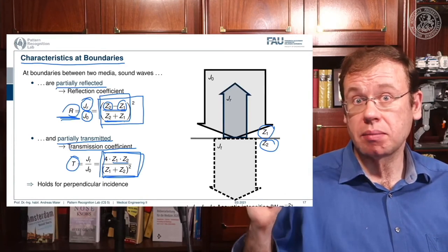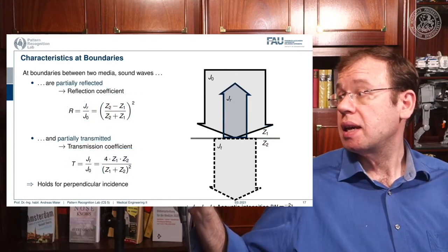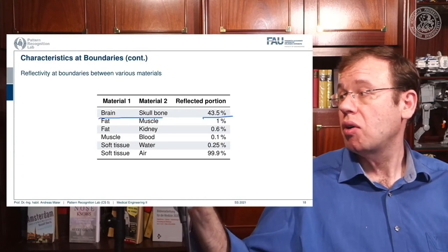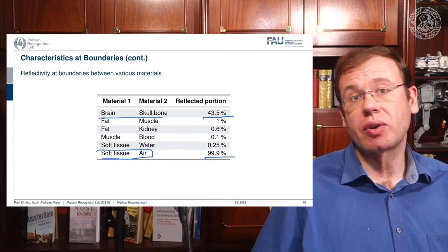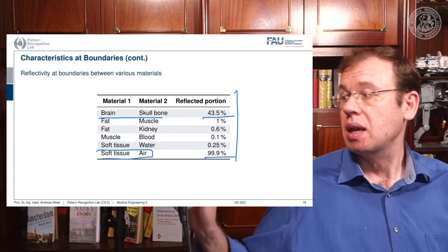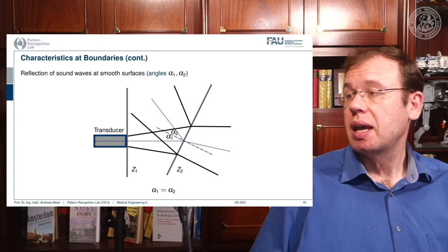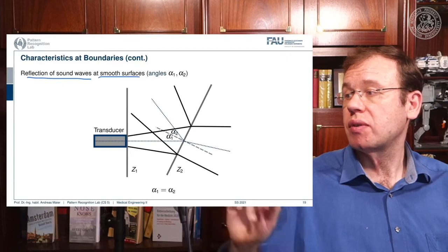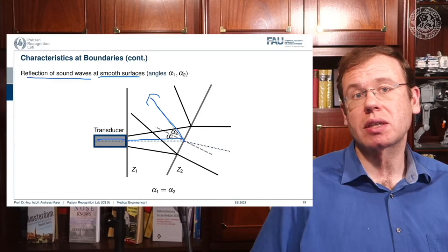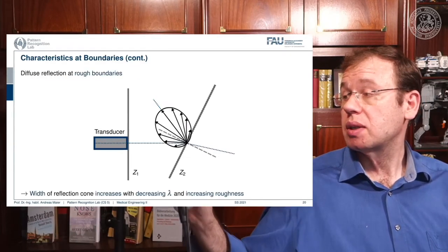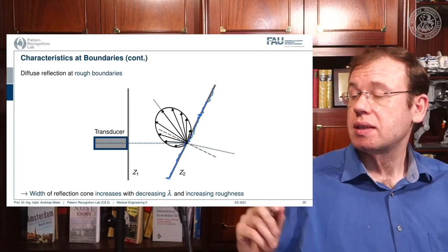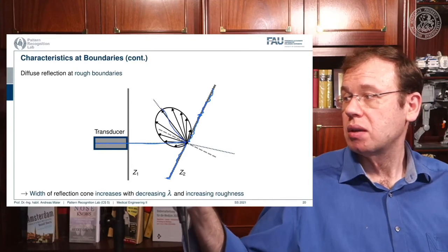We can compute reflection percentages from these acoustic impedances: brain and skull bone show 43% reflection, soft tissue and air show 99.9% reflection — a very high value. At smooth surfaces, a wave would reflect in a different direction. In the body, however, surfaces are never perfectly straight, so you get some reflection back toward the transducer as well, which helps with receiving the signal.